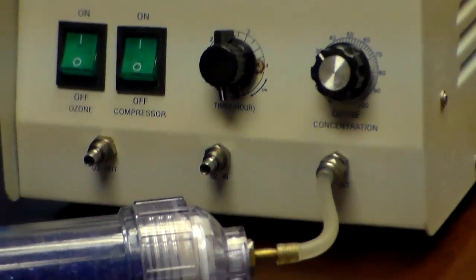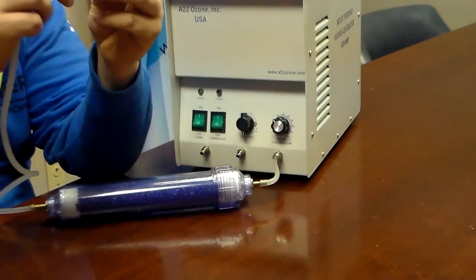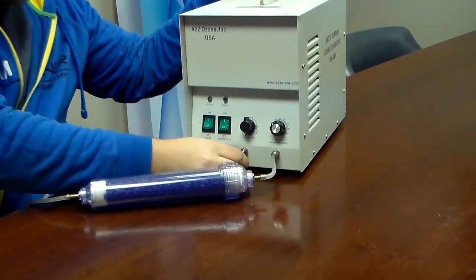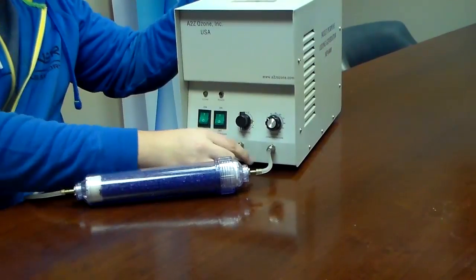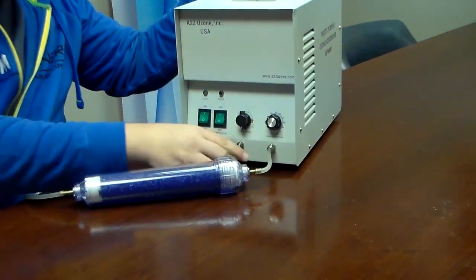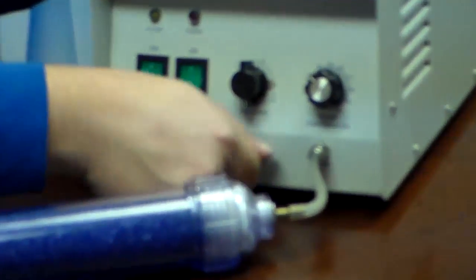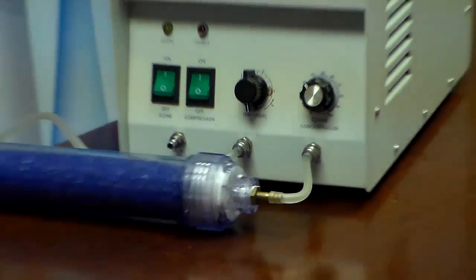Alright. And then finally, take your last bulkhead nut, put it on the end of your tube. Go ahead and fix your tubing onto your unit. Like so. Then you just connect your bulkhead nut, screw that on, and you have just installed your silica air dryer.